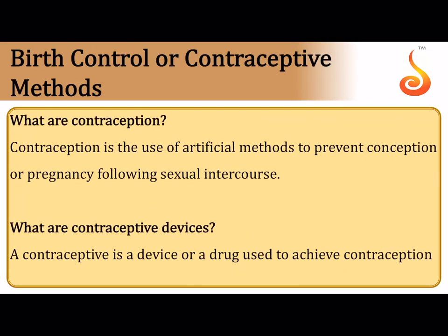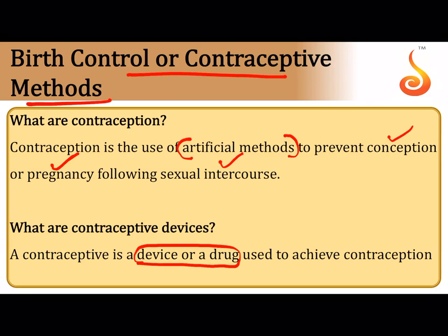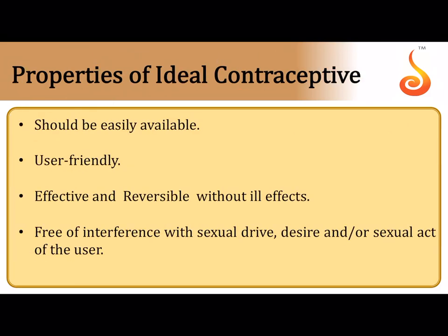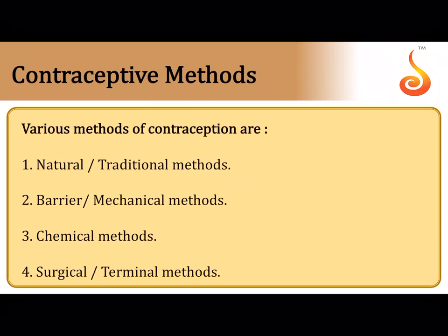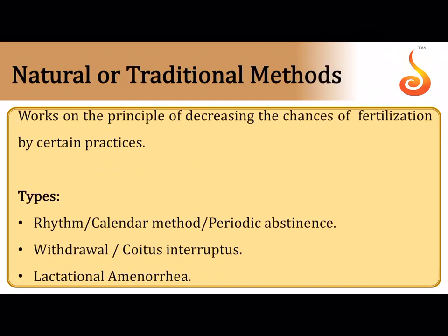Contraceptive methods are birth control methods — artificial methods employed by a couple to prevent conception, fertilization, or the resulting pregnancy. Contraception is the use of artificial methods to prevent pregnancy. An ideal contraceptive must be easily available, user-friendly, free of side effects, and should not interfere with the libido or sexual drive of the user. Major contraceptive methods include natural methods, barrier methods, chemical methods, and surgical methods.